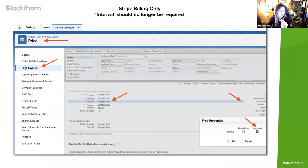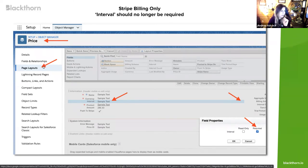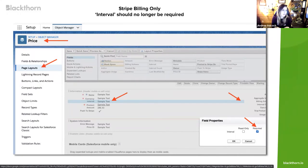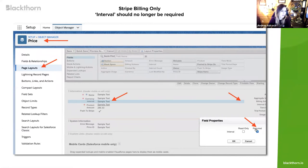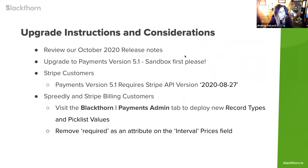For Stripe billing customers specifically, on the Prices object, go through Object Manager to your page layouts and find the layout you're using for the Plans/Prices object. Previously, the interval field was required on Plans. Because we now support one-time prices, that interval field should no longer be required — you'll need to remove that requirement so you can use one-time prices. That covers our upgrade instructions and considerations. Review the release notes for additional detail on any of these items.